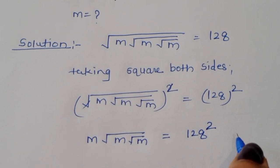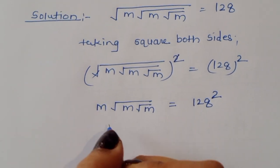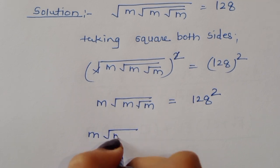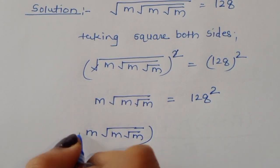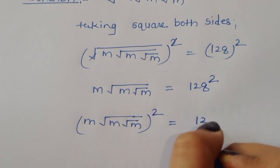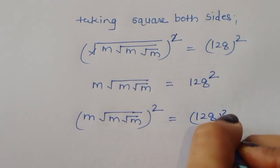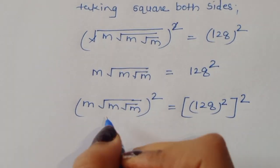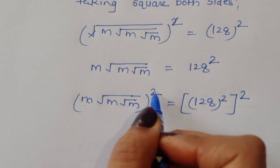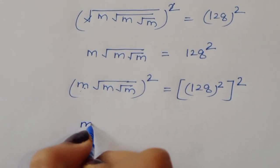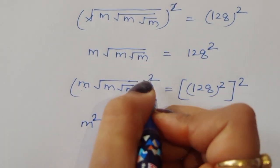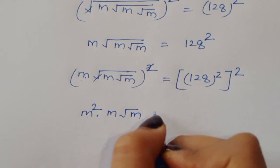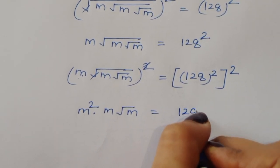Now again we are squaring both sides. So m times square root of m times square root of m, the whole square, is equal to 128 squared, squared. This m squared gives m squared. The next square cancels the square root, so we get m squared times m times square root of m is equal to 128 to the power 4.